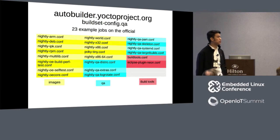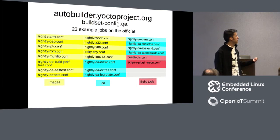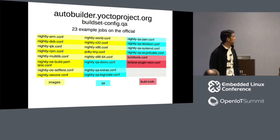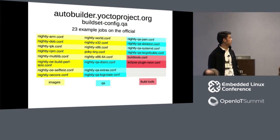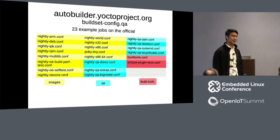The jobs in blue are QA jobs — for example, log rotate builds a base image, adds logrotate to it, and runs some QA checks. The jobs in red are build tools built on the AutoBuilder, like the Eclipse plugin and probably the SDK package.